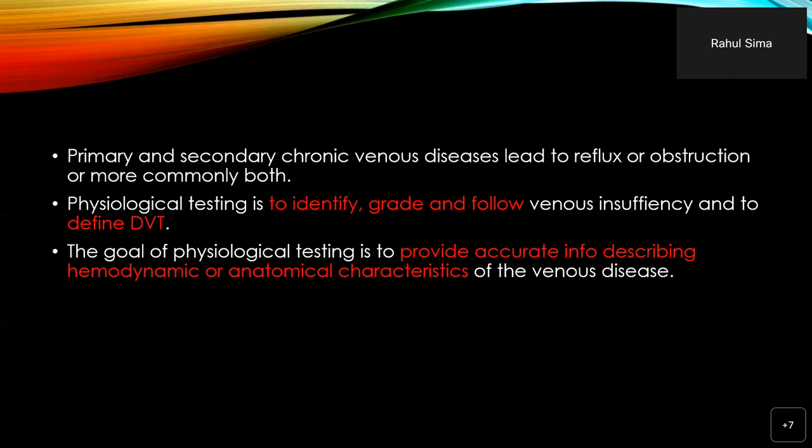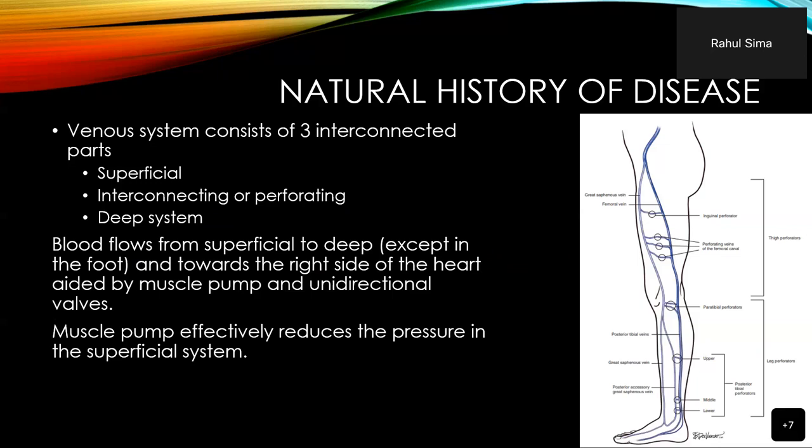The venous system in the lower limb consists of three interconnected systems: the superficial, deep, and perforating system. Blood flows from superficial to deep except at the ankle and towards the right side of the heart, aided by respiration, the muscle pump, and unidirectional valves. The muscle pump effectively reduces pressure in the superficial system.